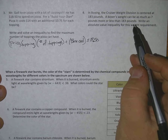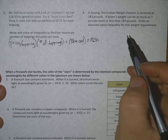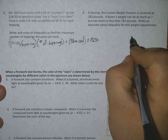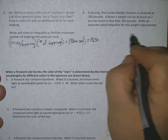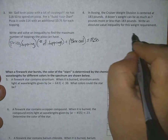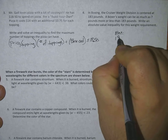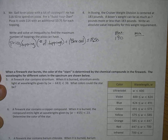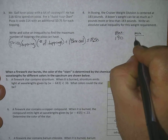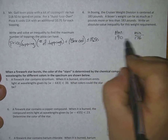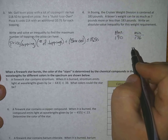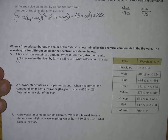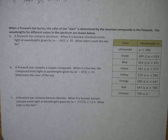For the boxing problem: the cruiserweight division is centered at 183 pounds, and the boxer's weight can be as much as 7 pounds more or less than 183. Write an absolute value inequality for this weight requirement. The maximum is 190 and the minimum is 176. You need to use absolute value to say that x can be between those values, inclusive. If you have any questions on that, come talk to me.